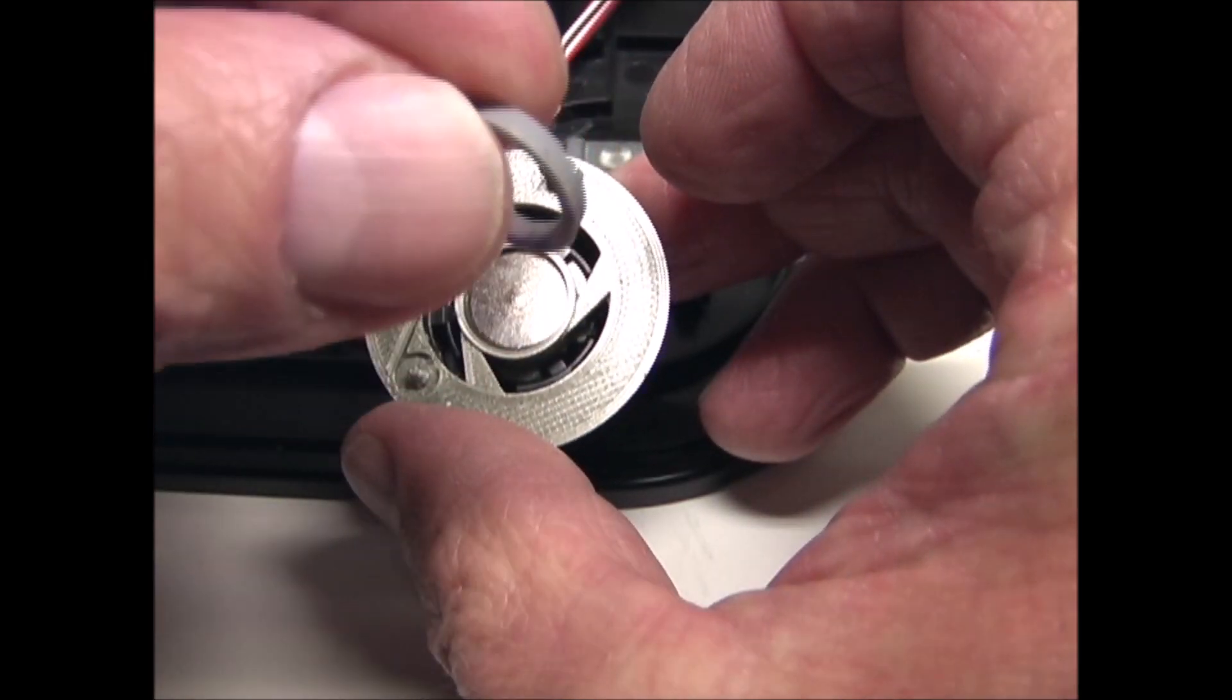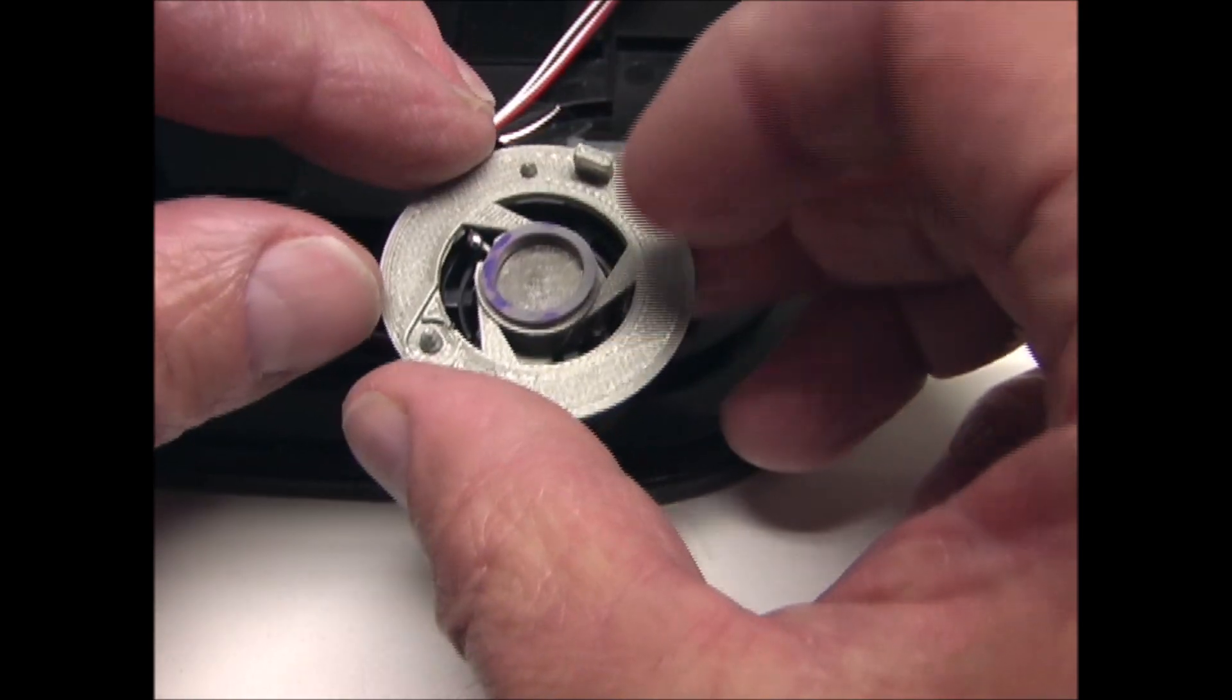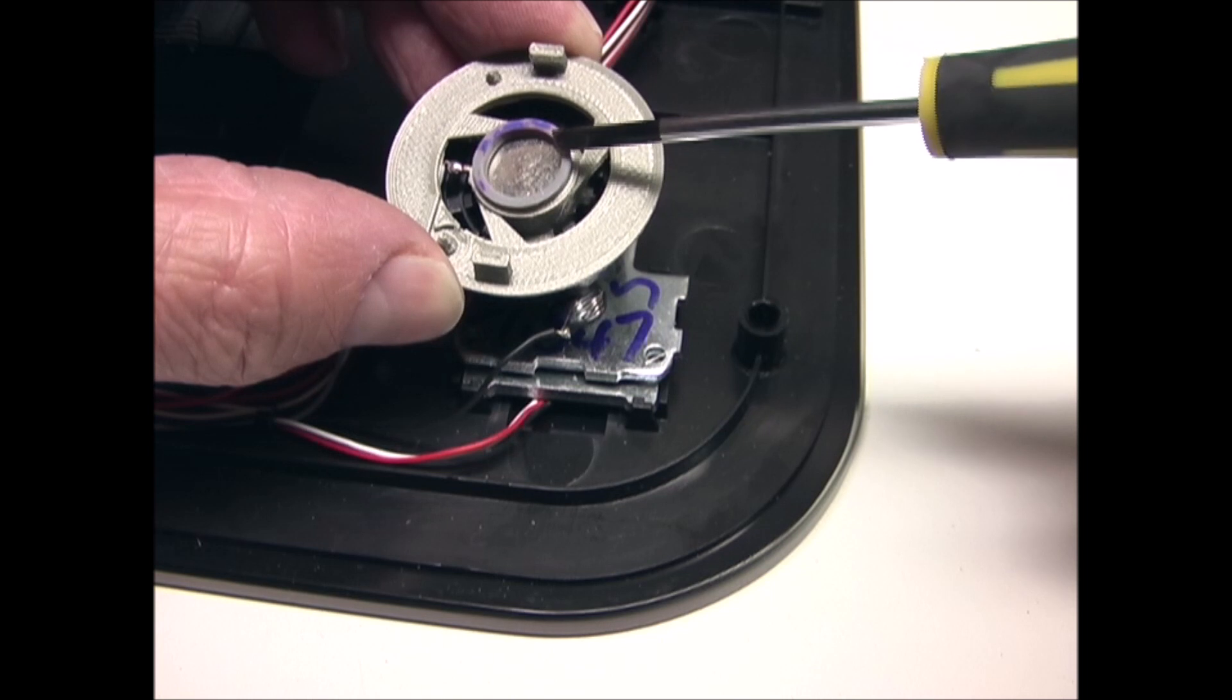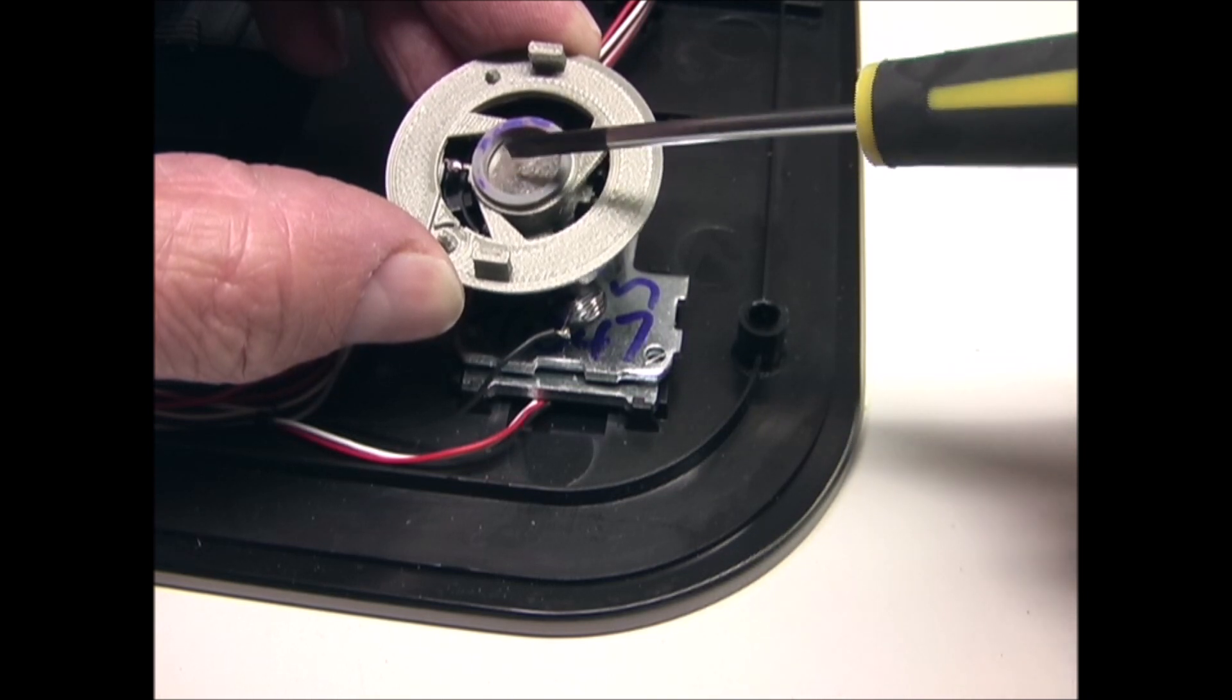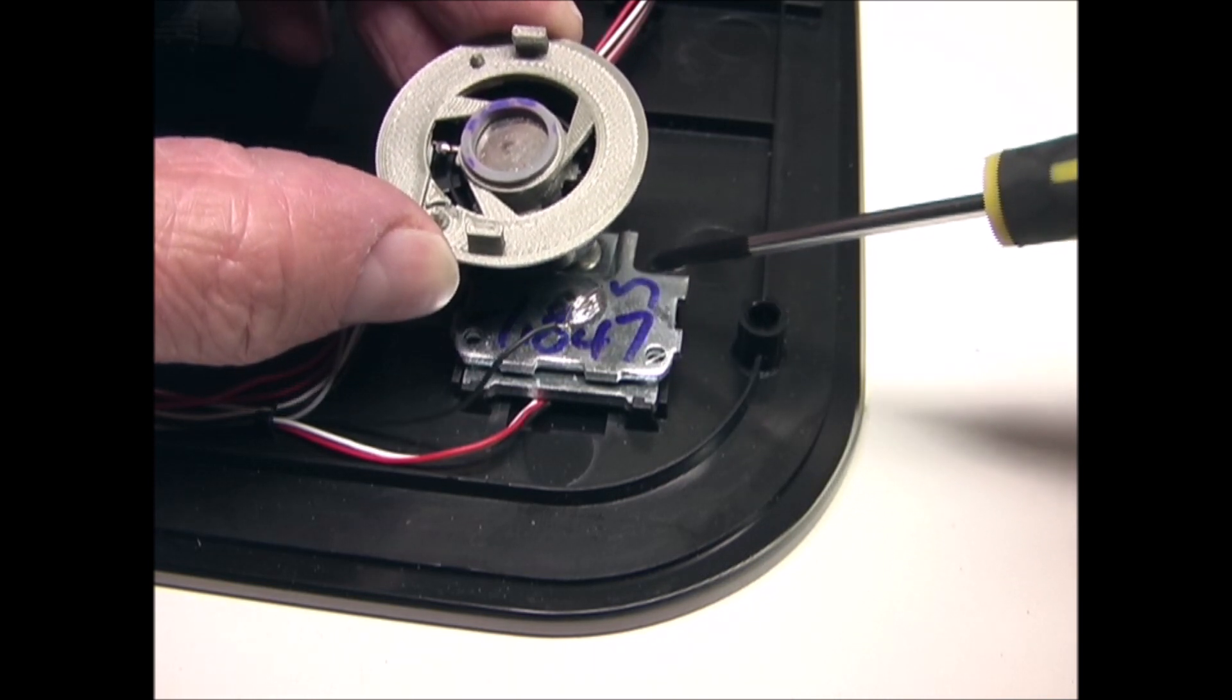And then next, this little rubber ring goes on top of the disc. When you step on the scale, it compresses this rubber ring, allowing this metal disc to touch on here, completing a circuit. And that's what wakes up the scale.